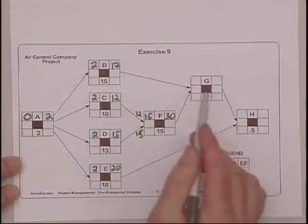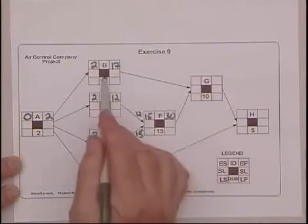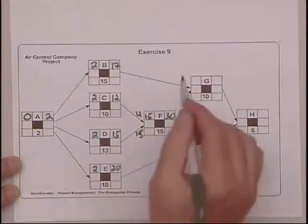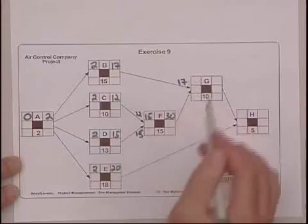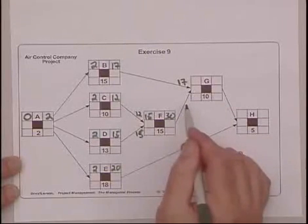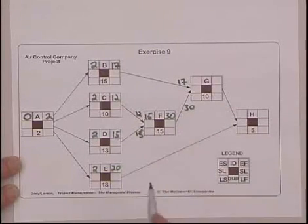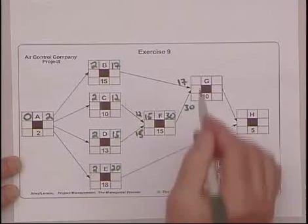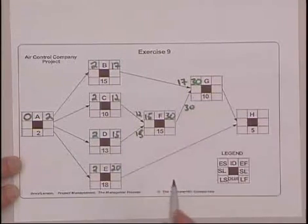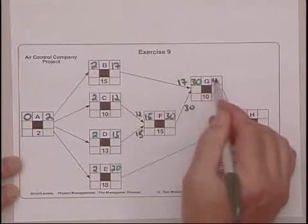And now we have another merge. G can't start until both B and F are done. The earliest B is done is 17. The earliest F is done is 30. Again, we choose the larger number, 30. 30 and 10 is 40.